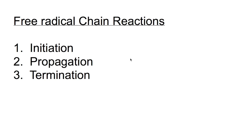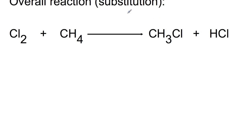We're going to look at each of the steps in turn. The overall reaction that we're looking at is a substitution reaction. The reaction we're going to concentrate on is the reaction between chlorine and methane. Previously you would have said there was no reaction between chlorine and methane. However, using a free radical chain reaction, we can substitute one of the hydrogen atoms in the methane for a chlorine atom to produce methyl chloride and hydrogen chloride.